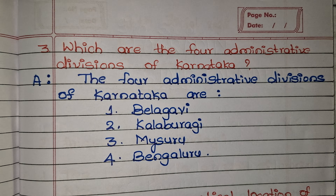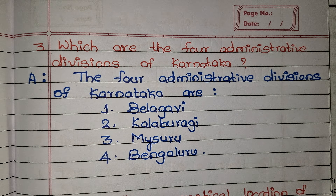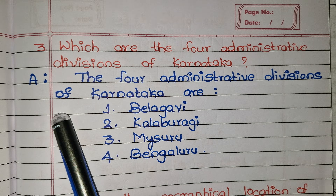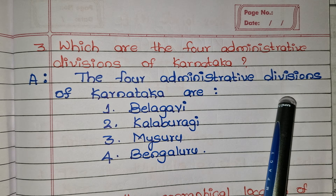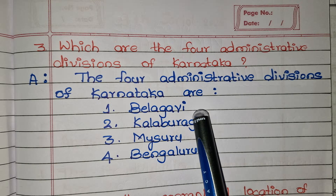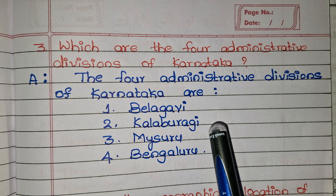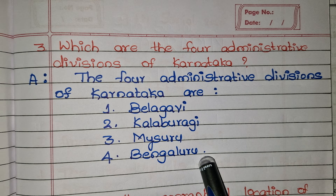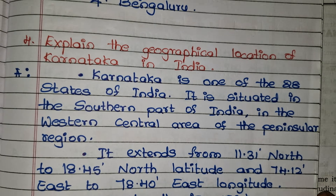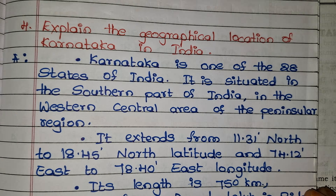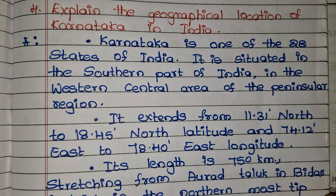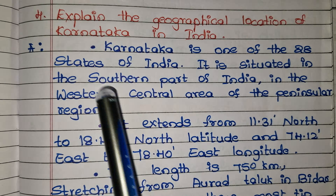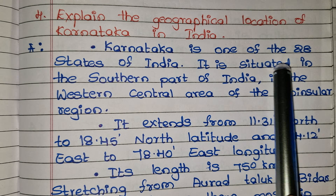Which are the four administrative divisions of Karnataka? The answer is: the four administrative divisions of Karnataka are Belagavi, Kalaburagi, Mysuru, and Bengaluru.